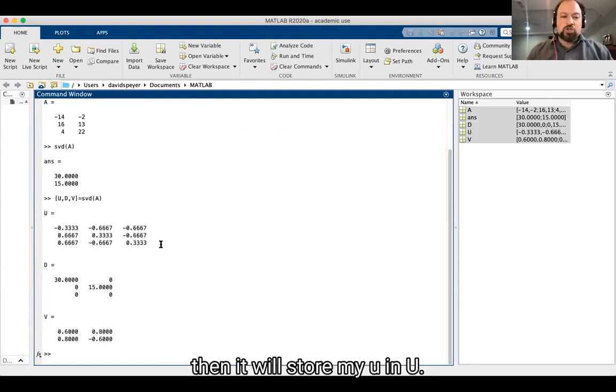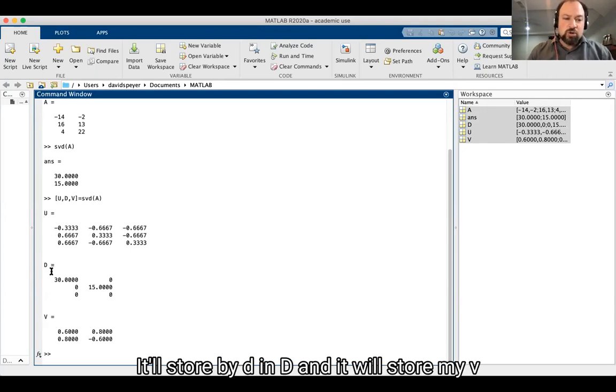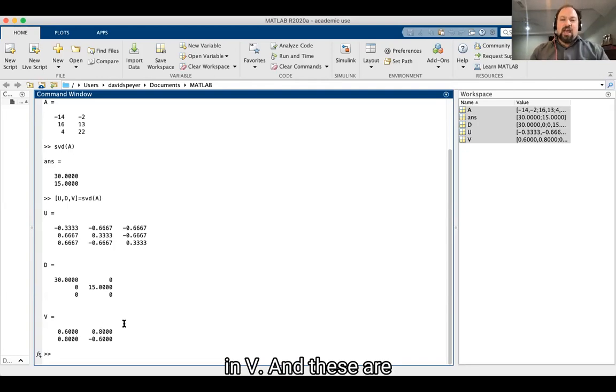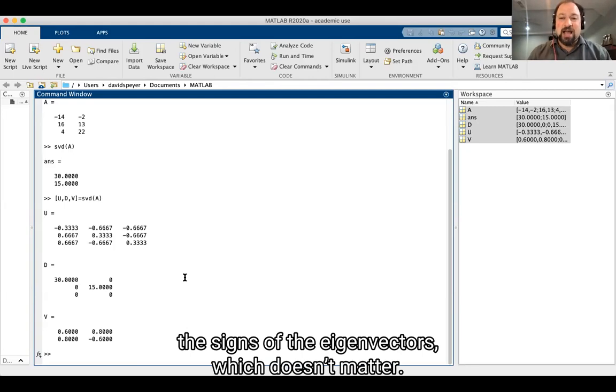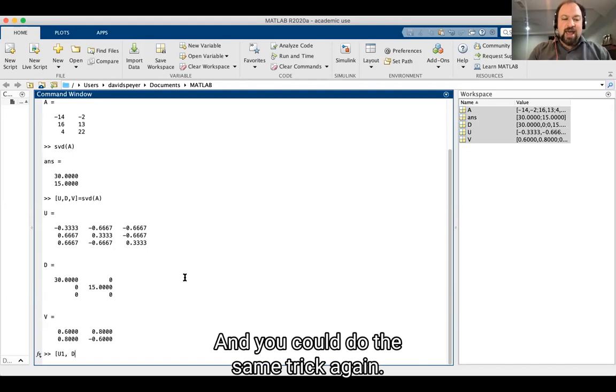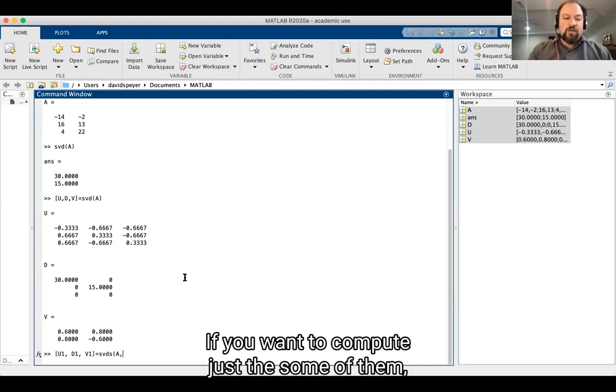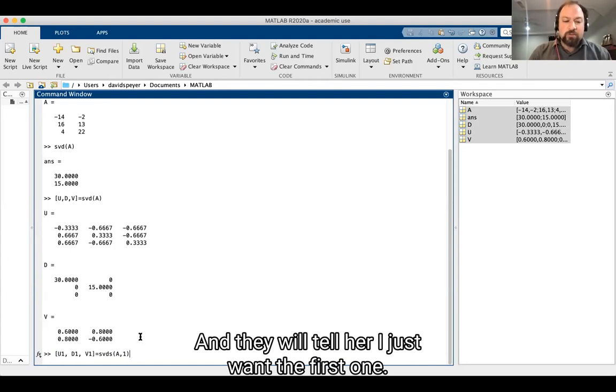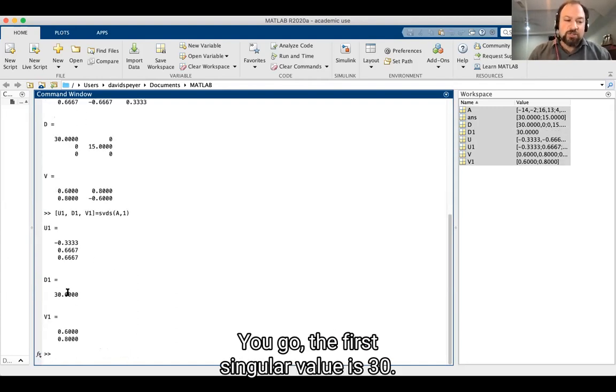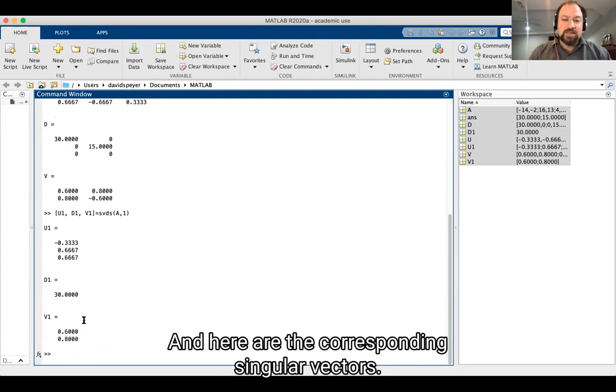And these are not quite the same matrices you've seen before, but they're equivalent. They're the same up to switching the signs on some of the eigenvectors, which doesn't matter. And you can do the same trick again. If you want to compute just some of them, the command for that is SVDS, just put an S at the end, and then tell it I just want the first one, and there you go. The first singular value is 30, and here are the corresponding singular vectors.